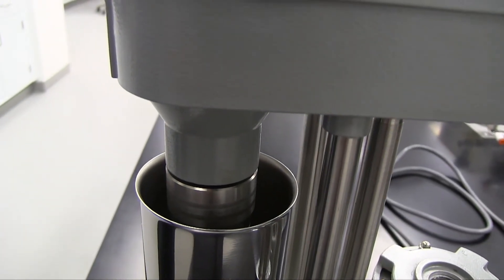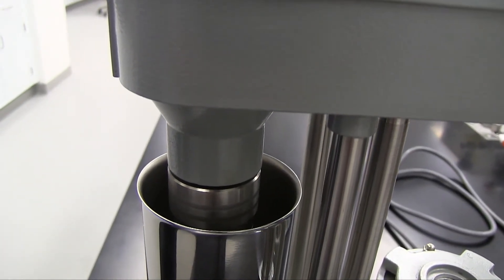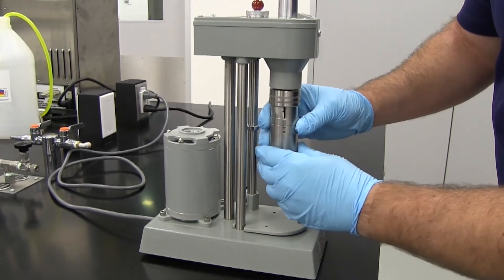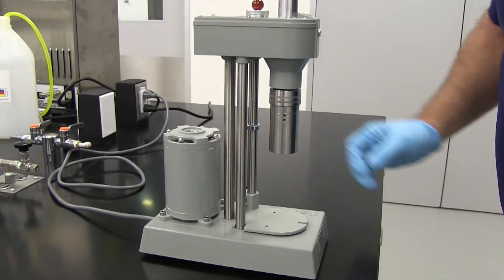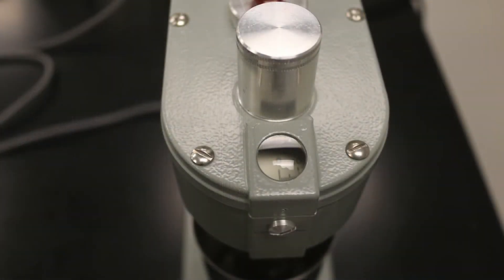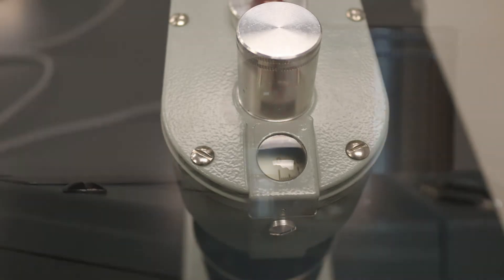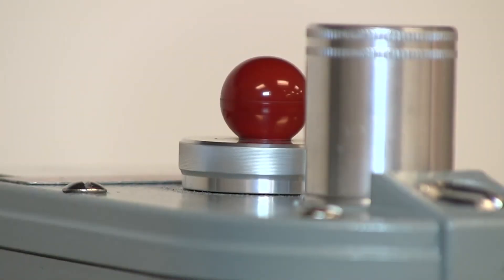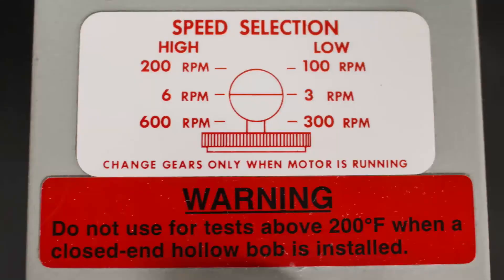This torque is transmitted to a precision spring where its deflection is measured on a dial. The Model 35 is designed for the viscosity in centipoise to be indicated on the dial with the standard R1 rotor, B1 bob, and F1 torsion spring at 300 RPM. Viscosities at other speeds may be measured by using multipliers of the dial reading.